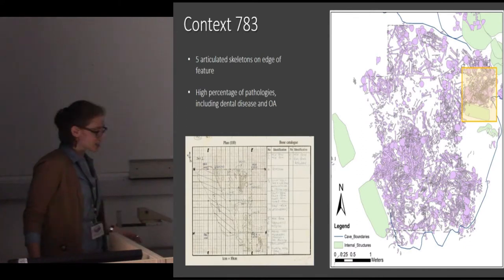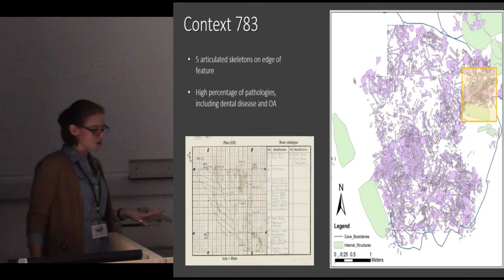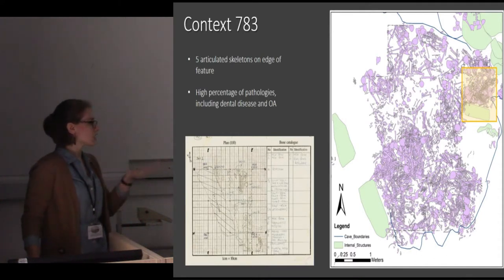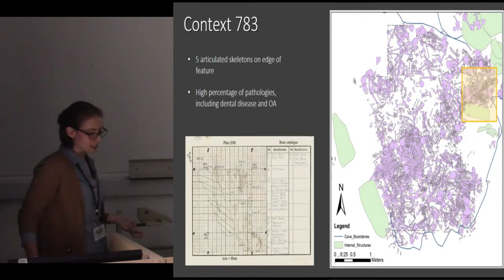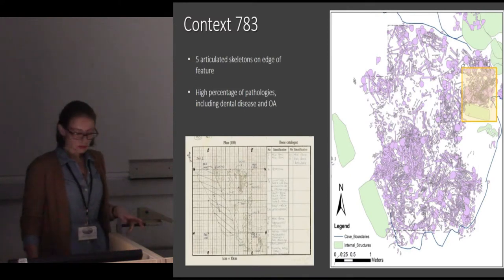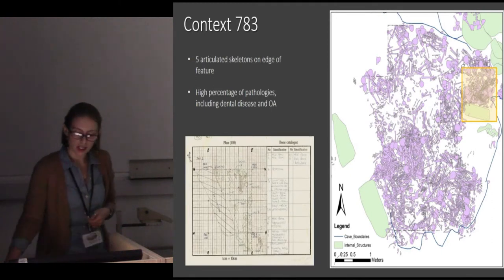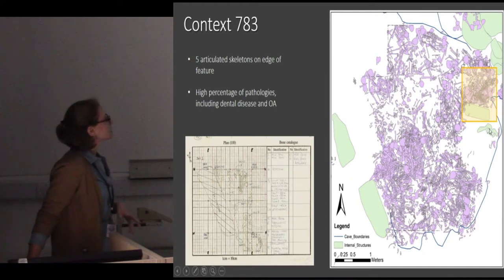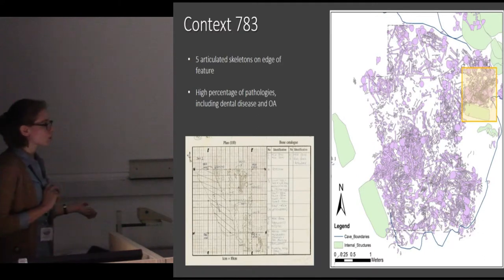Bone numbers were indicated on the excavation plan and also on the finds bags, which has allowed me, in theory, to cross-reference the information recorded in the lab — where I have recorded all of the finds bag labels into my database alongside the taphonomic information — with that recorded at excavation, and with the information recorded in ArcGIS, where each polygon, each bone, has an entry in the attributes table recording details described at excavation. So this is kind of an experiment of whether what we see in the lab corresponds to what we see in the ground.